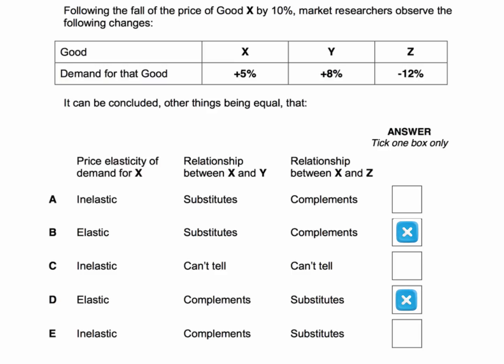Now let's think about the effect on the demand for good Y. If the price of X goes down by 10%, demand for Y goes up by 8%. Well, if people are buying more of X and therefore more of Y, then Y must be a complement to X. So in which case, the answer using column 2 is it must be E — X and Y are complements.